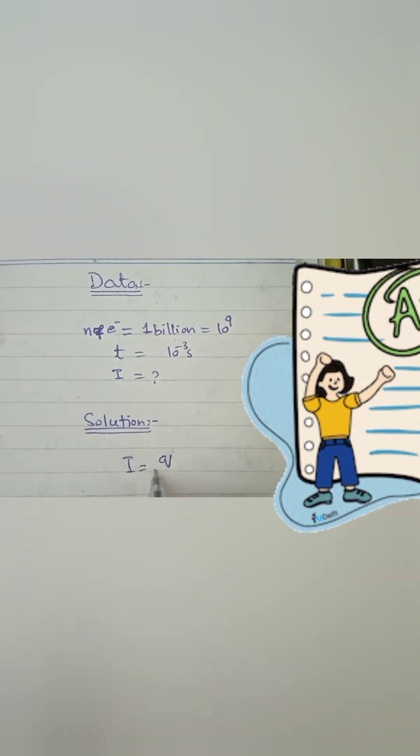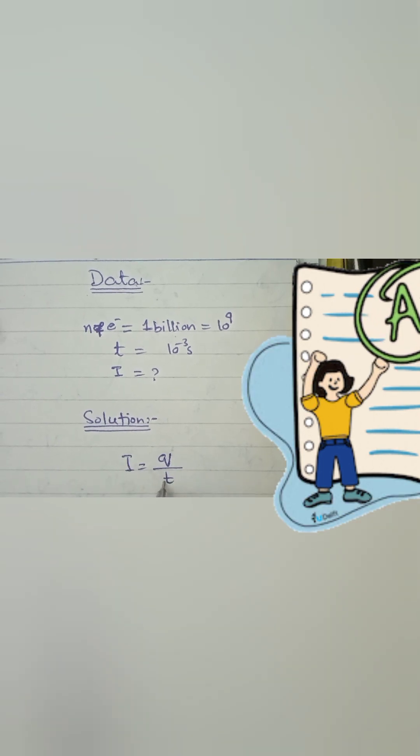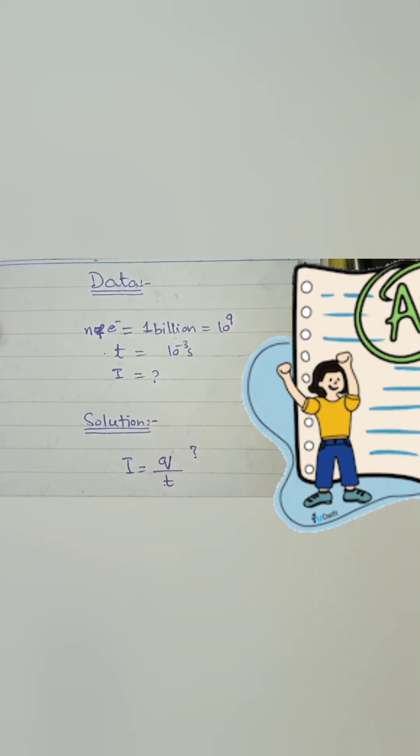Now let us solve. We know the equation of current is I equals q over t. Time is given, and we have to find q before calculating current.